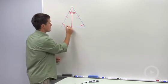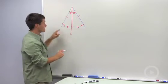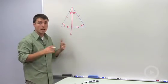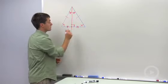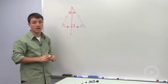We've created a median, which means this point divides this base into two congruent segments, and we've also created an altitude, which is a segment from a vertex perpendicular to the opposite side.